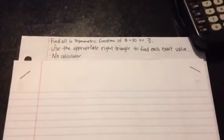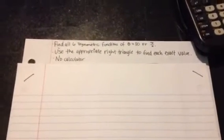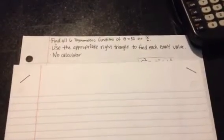Okay, so you've been asked to find all six trigonometric functions of theta equals 30 degrees, or pi over 6. It's not as difficult as you think it is, so with that said, I'll just get going.